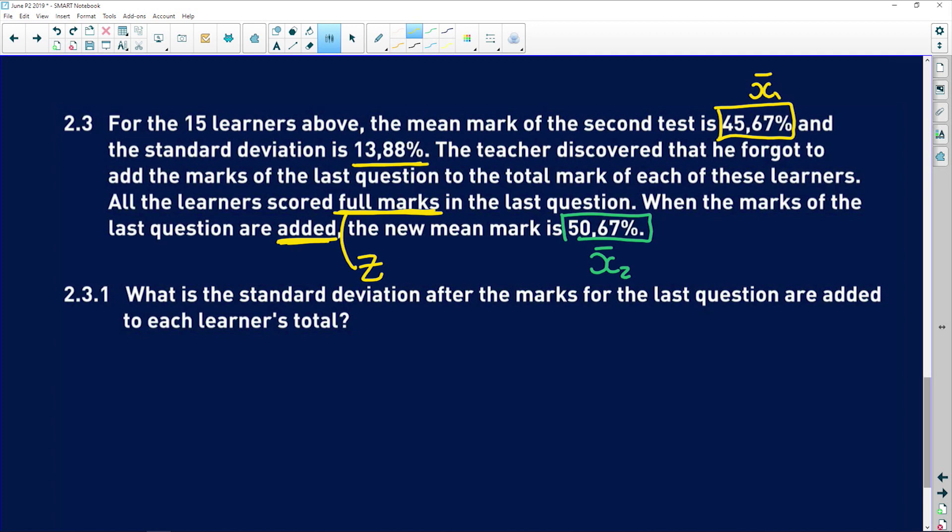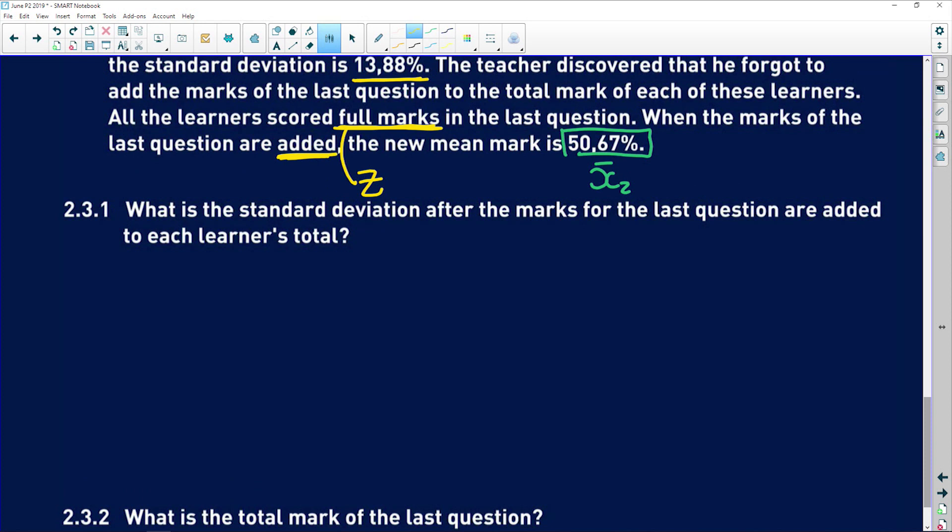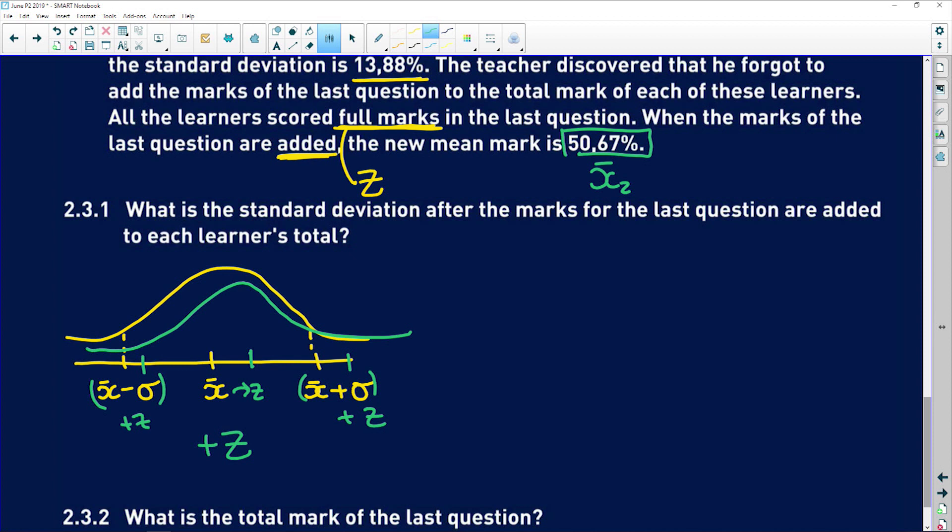So 2.3.1 says, what is the standard deviation after the marks for the last question are added to each learner's total? So I'm going to try and draw this for you guys. Remember you have your normal distribution. The mean sits right in the middle and then on either side there is the mean minus one standard deviation and the mean plus one standard deviation. And your normal distribution looks like this. So the majority of learner's marks sit within one standard deviation of the mean. So now if I'm adding the same value to every single score, do you guys agree with me that the mean is going to increase by that number? And so are both of these values. So if I do that, it's going to shift to the new values and our normal distribution is going to shift to the right as well. It's going to shift up.